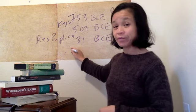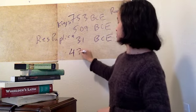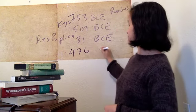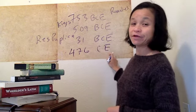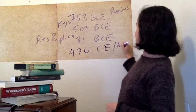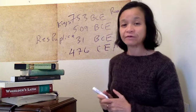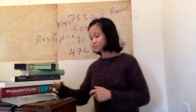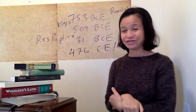And the Roman Empire lasts until 476 CE, that means Common Era. We also know it as AD, Anno Domini, when the Goths entered Rome. So that's a very capsule history of ancient Roman history.